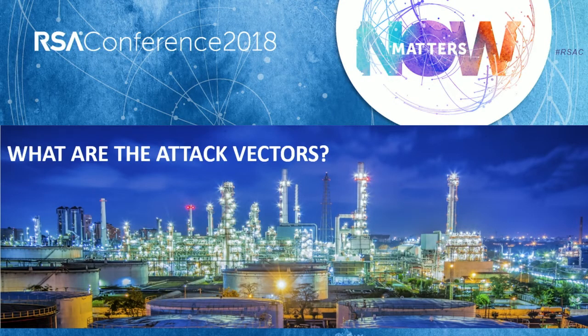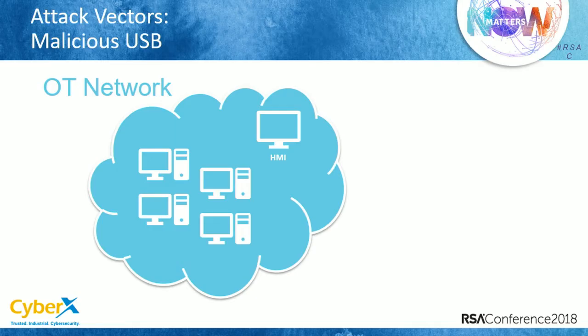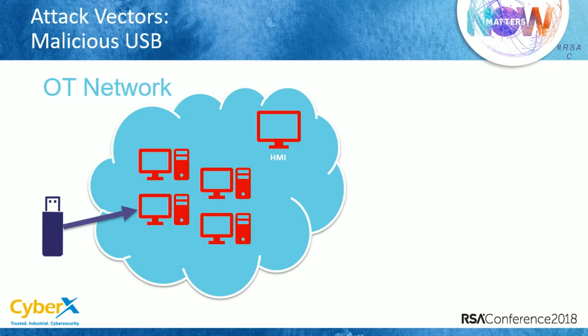Just a few examples of attack vectors in industrial networks — it's just some samples. The most simple one is a malicious USB: someone comes with a USB, infects the network. You might say USBs are an old thing, with all the auto-run stuff. But most OT networks are Windows XP-based, even older.